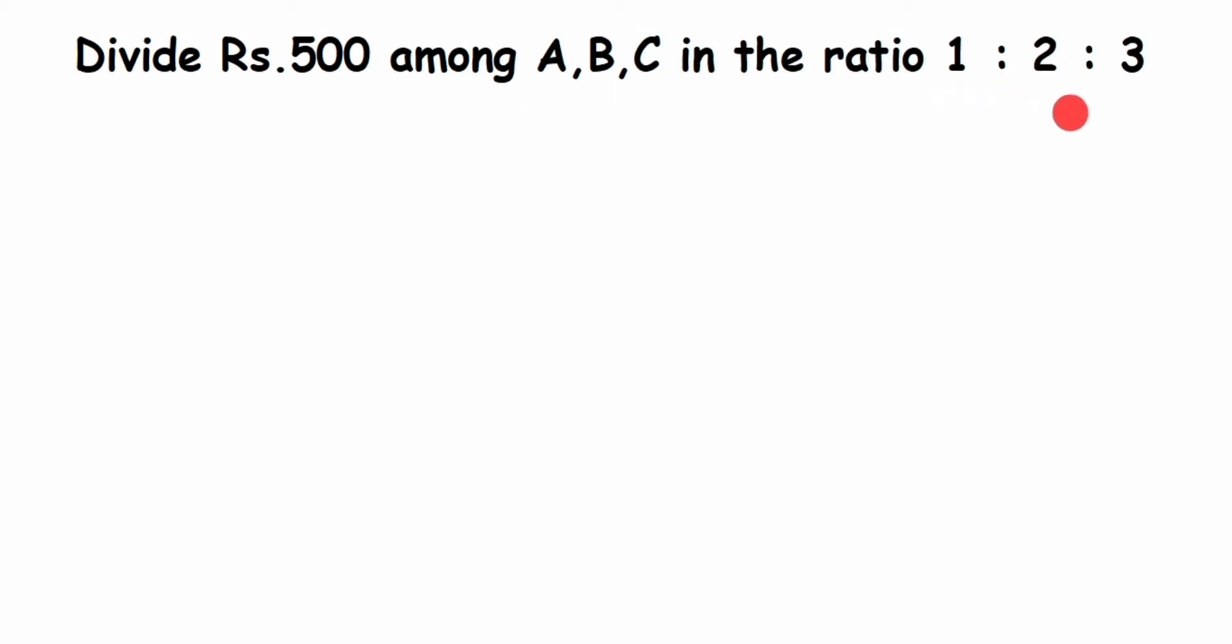Whenever ratios are given, we introduce a variable, so I'm going to take a variable as x. Let's start solving this. We have to divide 500 rupees in the ratio 1:2:3.